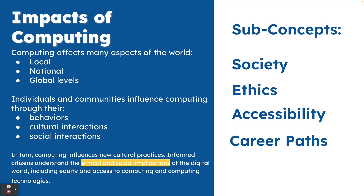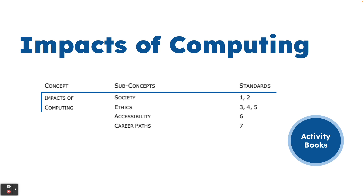Impacts of computing is based on thinking about how using technology affects our local, national, and global society. The sub-concepts are society, ethics, accessibility, and career paths. Society and ethics make up the larger portion; accessibility and career paths have one standard each. The focus is on behaviors, cultural interactions, and social interactions, and we think about the influence that computing has on our different populations. There are seven standards within this concept area.